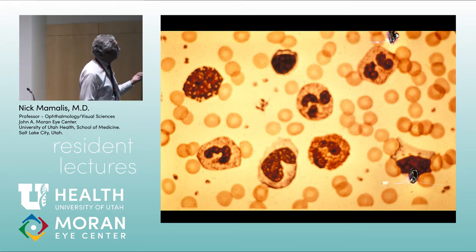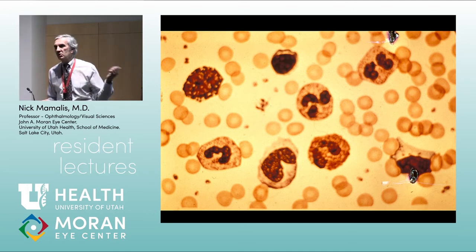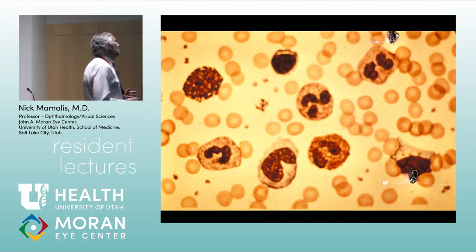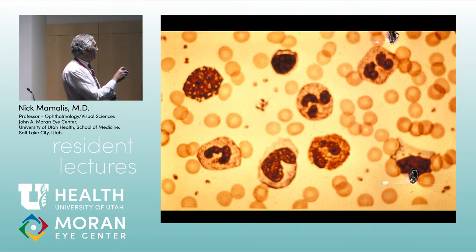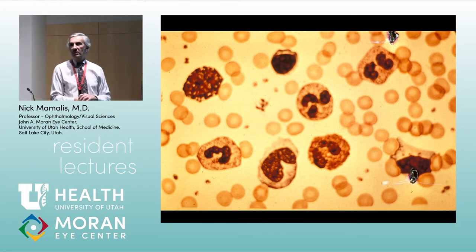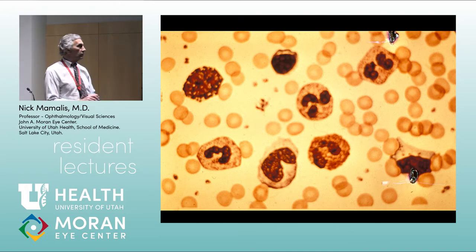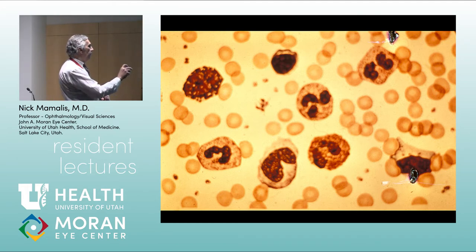Now let's talk about inflammation. This slide has pretty much every type of white blood cell and red blood cell on it — it's essentially a fake slide because you'd never see a blood smear with all these cells together. A neutrophil — also called a PMN, polymorphonuclear neutrophil — has multiple nuclei. It's your standard inflammatory cell.